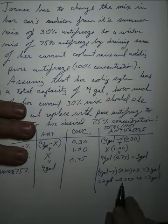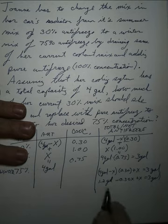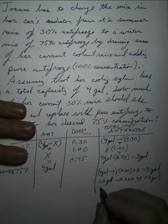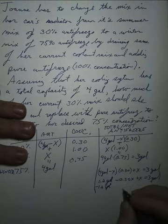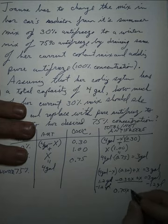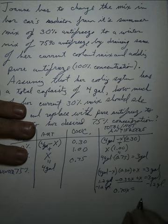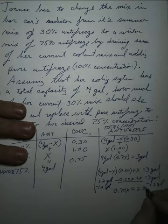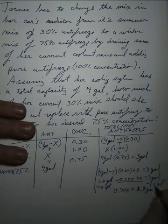Using the distributive property, I've got 1.2 gallons minus 0.30x plus x equals three gallons. We're going to keep our x's on this side, and we'll solve and put the constants, in this case the number of gallons, on the other side. So we're going to subtract 1.2 gallons here, and combining like terms, this is going to be 0.70x, and subtracting from here, 3 gallons minus 1.2 gallons is 1.8 gallons.